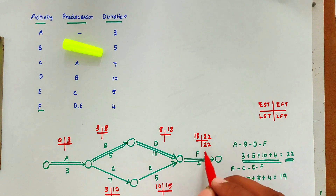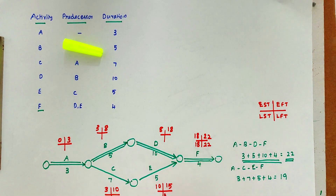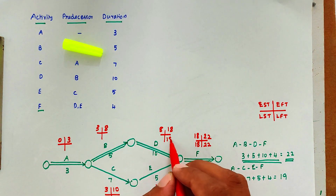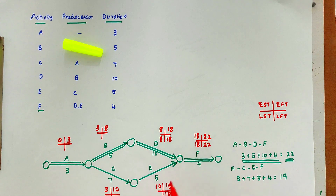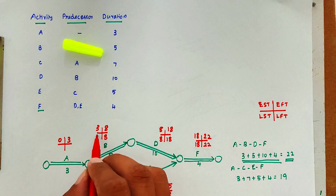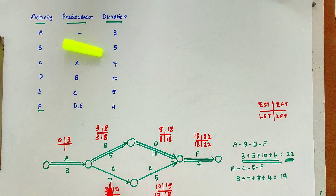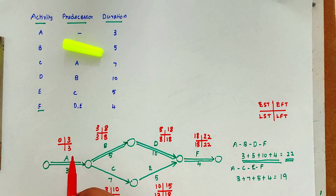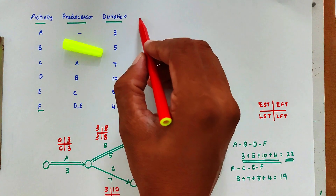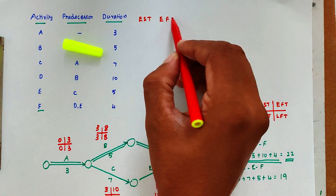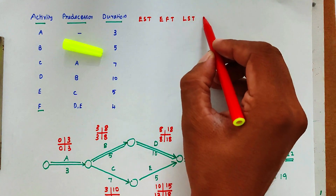Now for the backward pass: 22 − 4 = 18 for the LST of F, so we place 18 there. Then 18 − 10 = 8 for D, and 18 − 5 = 13 for E. We place 13 here. Then 8 − 5 = 3 for B, and 13 − 7 = 6 for C. We take the minimum value at the merge node before A, which is 3. So 3 − 3 = 0.